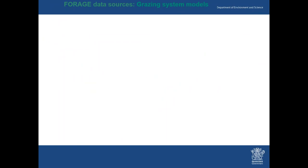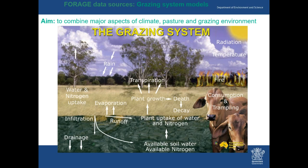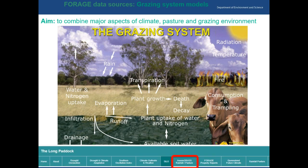Next are our grazing systems models. We aim to combine major aspects of climate, pasture, and the grazing environment through the GRASP model, Aussie GRASP, and the GRASP point model. Climate aspects including rain, radiation, and temperature are brought in alongside plant growth driven by infiltration, evaporation, water and nitrogen uptake, death and decay, transpiration, and animal consumption and trampling. We also add fire, infiltration, deep drainage, and nitrogen dynamics — whatever we have data for and the science supports. For more detail, visit the Aussie GRASP website.